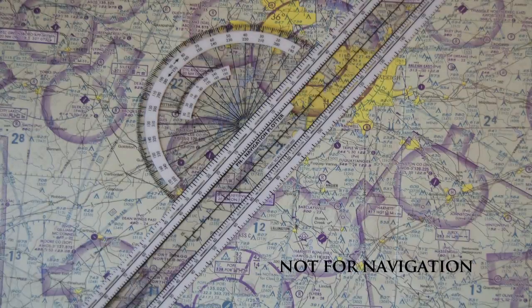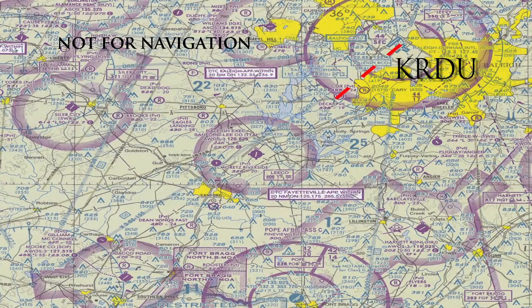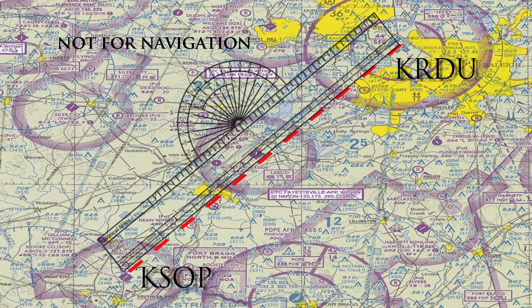The first thing we need to do is grab a plotter, a sectional, and decide where we want to go. Let's say we choose our departure airport as Raleigh-Durham and our destination airport as Moore County. Let's check the distance between both points. As you can see, the distance from Raleigh to Moore County is approximately 48 nautical miles.